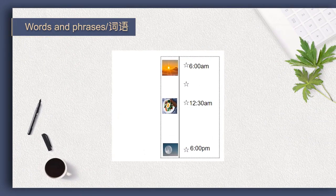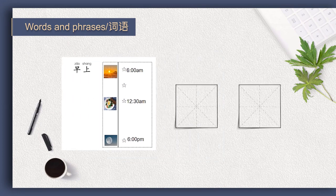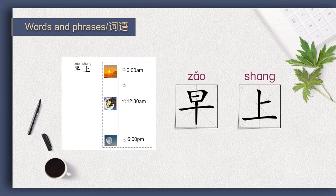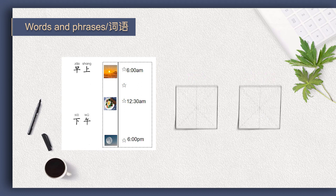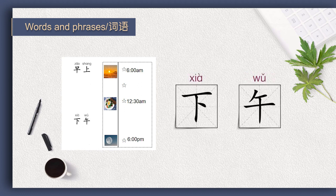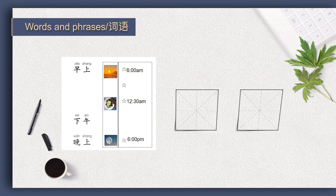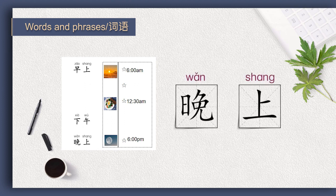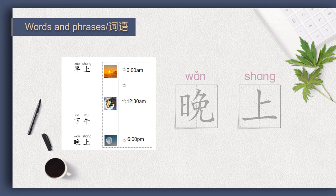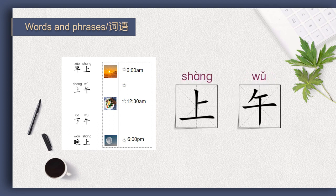We learned that early morning in Chinese is 早上. Afternoon is 下午. Evening is 晚上. The early part of the day between dawn and noon is 上午.